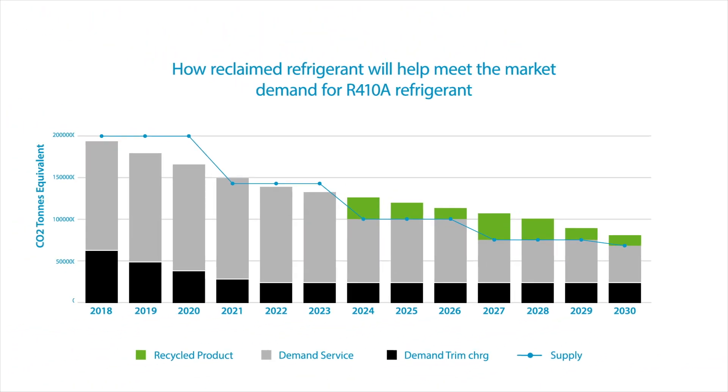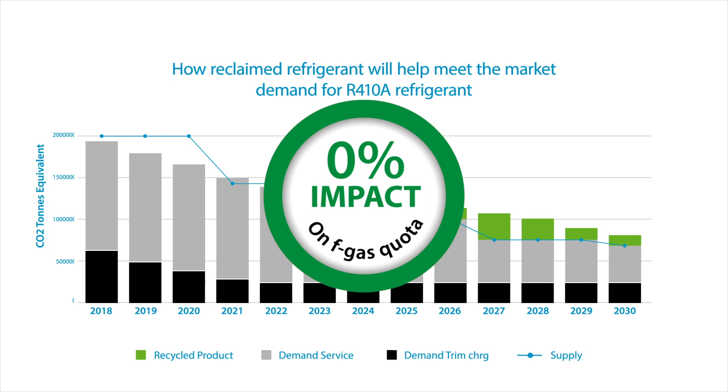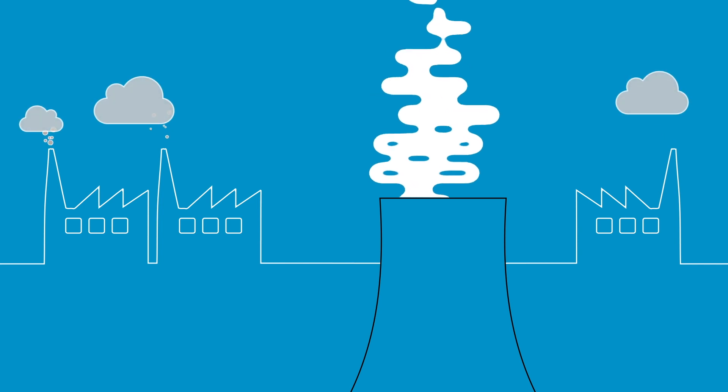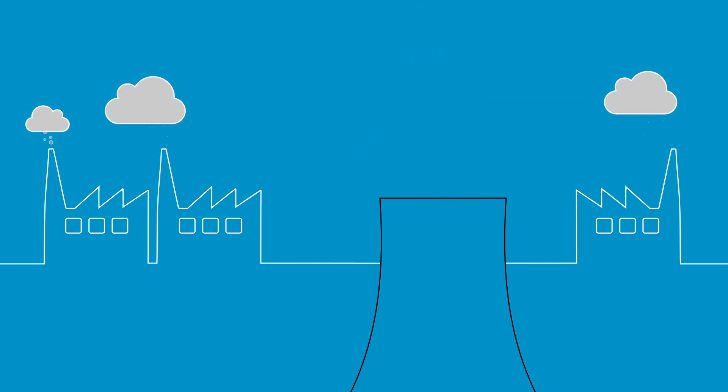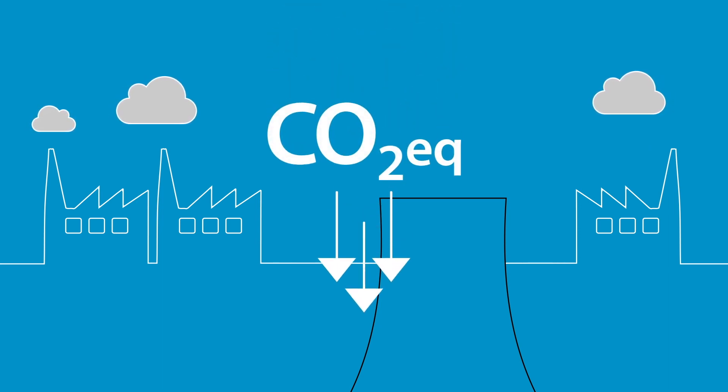In fact, it has zero impact on the F-gas quota. That's because reclaiming refrigerant avoids the carbon emissions associated with manufacturing new F-gases, so systems that use reclaimed refrigerants can have a lower environmental impact overall.